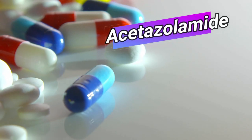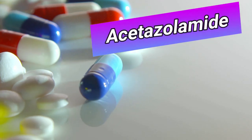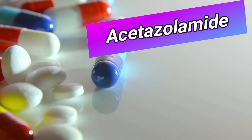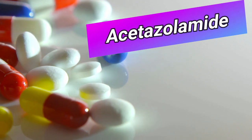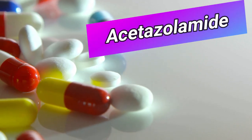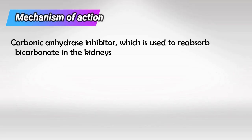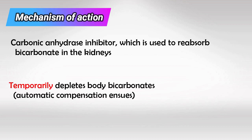Good morning everyone and welcome back. Today we're going to be talking about acetazolamide. Acetazolamide works by inhibiting the renal enzyme carbonic anhydrase, which normally functions to reabsorb bicarbonate. So it depletes the body's bicarbonate and causes temporary metabolic acidosis.